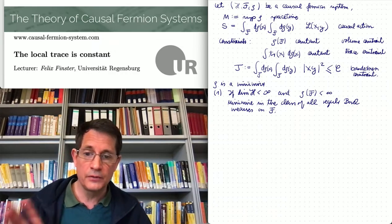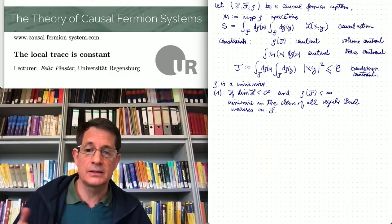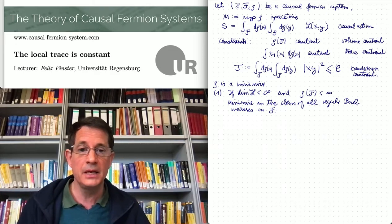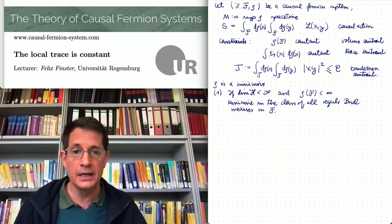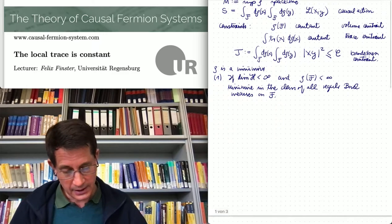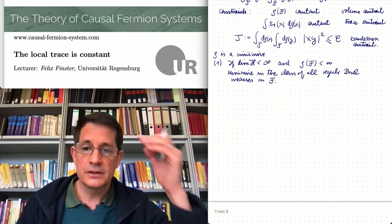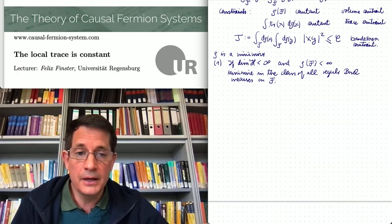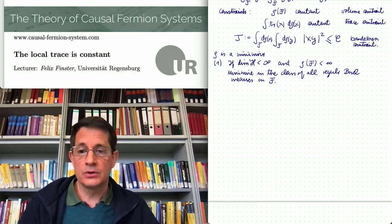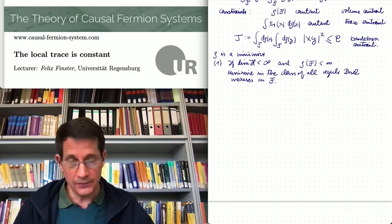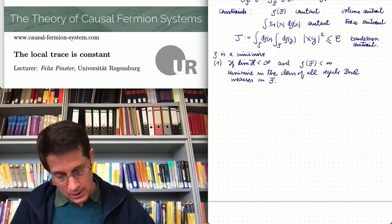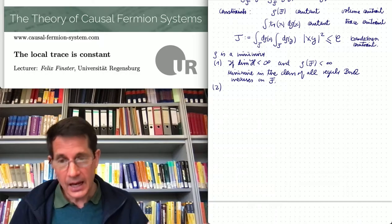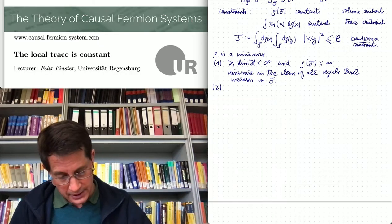I think it is better to first understand what the Euler-Lagrange equations mean and what it means to be a minimizer, before proving abstract existence. This is the finite dimensional setting. Unfortunately, this is not sufficient for some of our applications. Namely, if we want to describe Minkowski space, then the total volume is infinite, and therefore this doesn't fit. This leads one to consider the infinite dimensional setting.